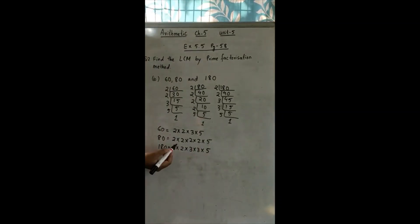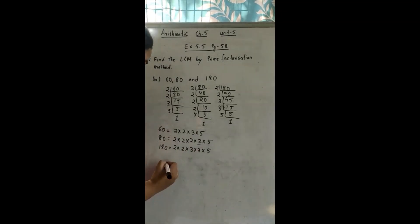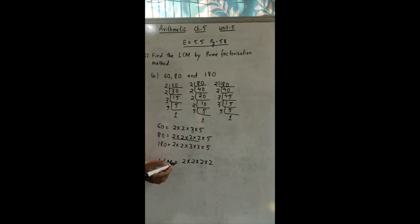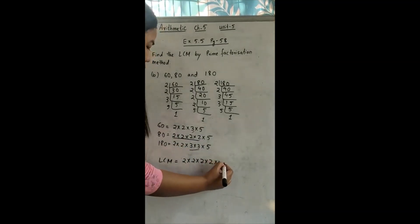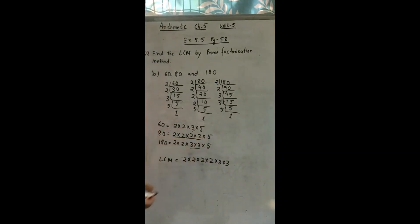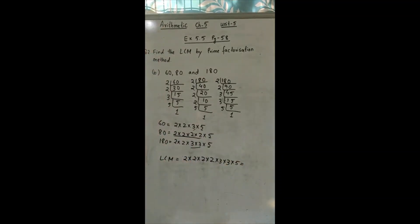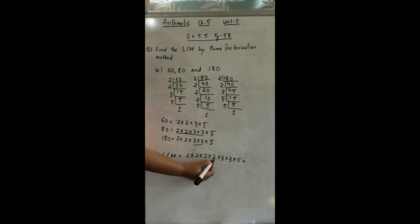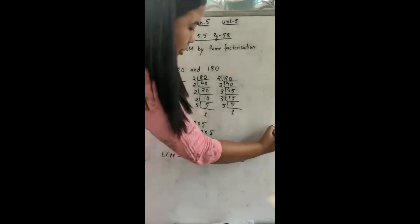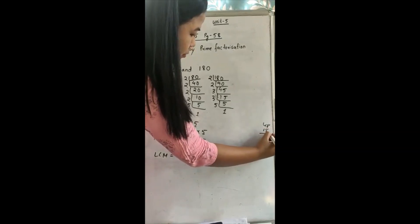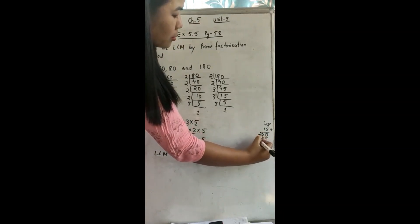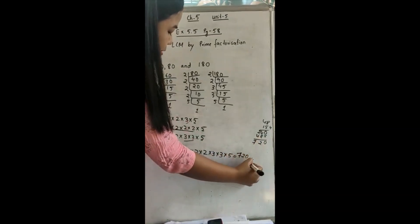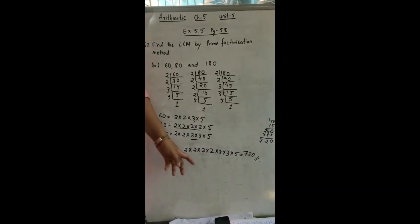Now you see here: 2 is repeated 4 times in 80, so we are going to multiply 2 four times. Next is 3: 3 appears 1 time here and 2 times here, so we are going to write 3 two times. And 5 appears 1 time each, so we will write 5 only 1 time. Now multiply: 2 × 2 = 4, 4 × 2 = 8, 8 × 2 = 16, 16 × 3 = 48, 48 × 3 = 144, 144 × 5 = 720. So the LCM of 60, 80, and 180 is 720.